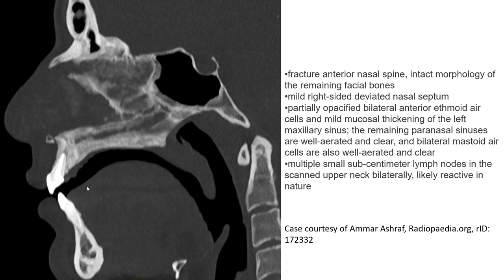Another case of nasal bone fracture on CT, where I show the fracture of the anterior nasal spine. Intact morphology of the remaining facial bones. Partial opacification of bilateral ethmoid air cells. More caudal thickening of the left maxillary sinus. The coronary sinuses are well aerated and clear.